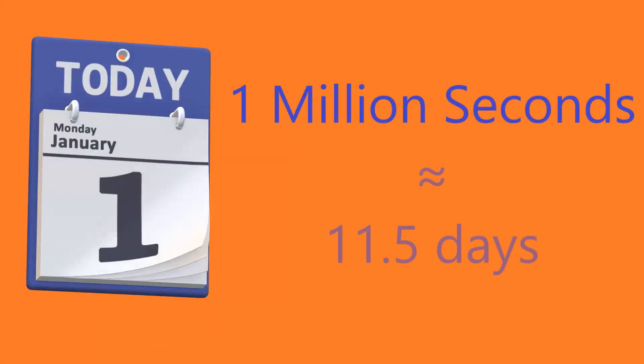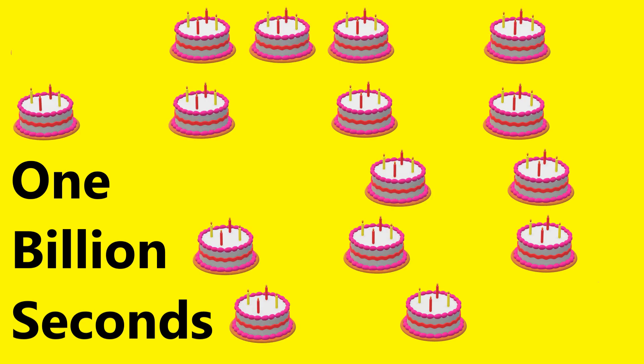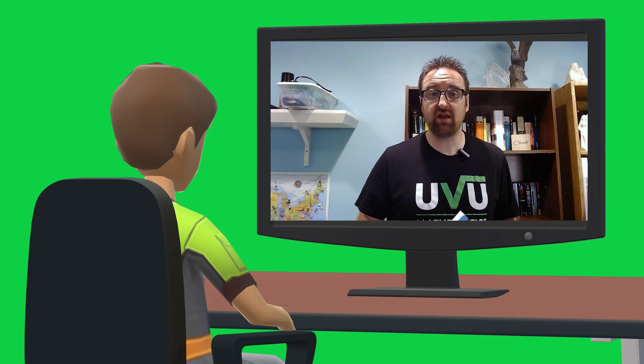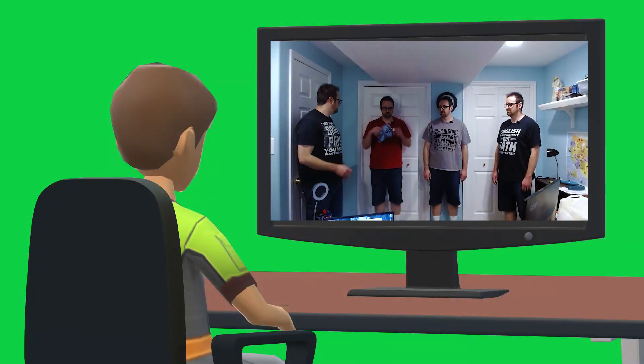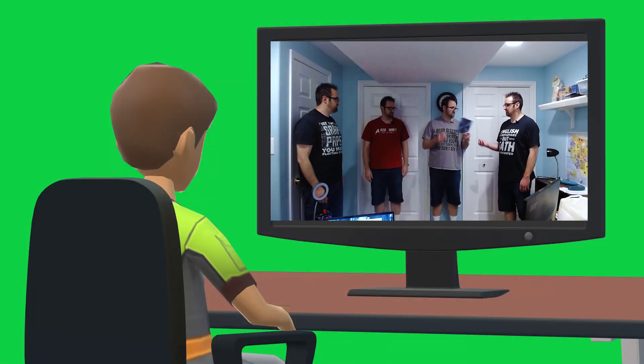Some numbers are big, but some numbers are just so unbelievably gigantic that they're hard to even comprehend. For example, a thousand seconds is just under 17 minutes. A million seconds is about 11 and a half days. A billion seconds is 31.7 years. That's longer than most YouTube viewers have been alive.